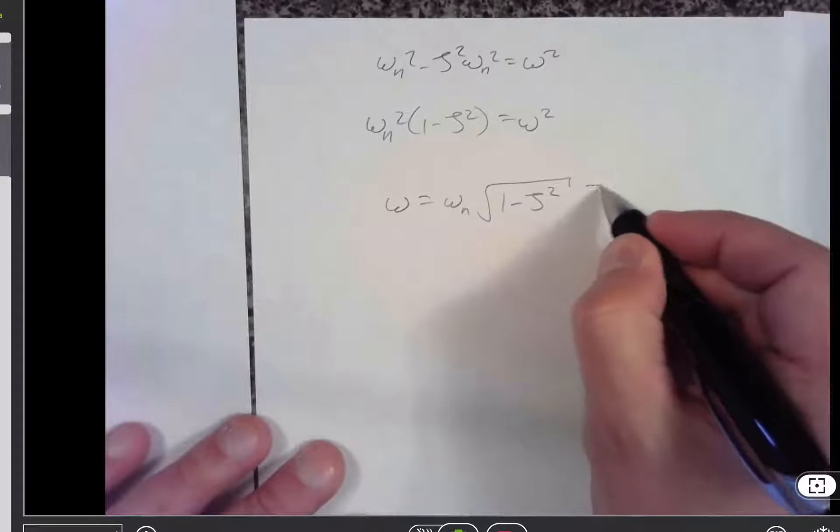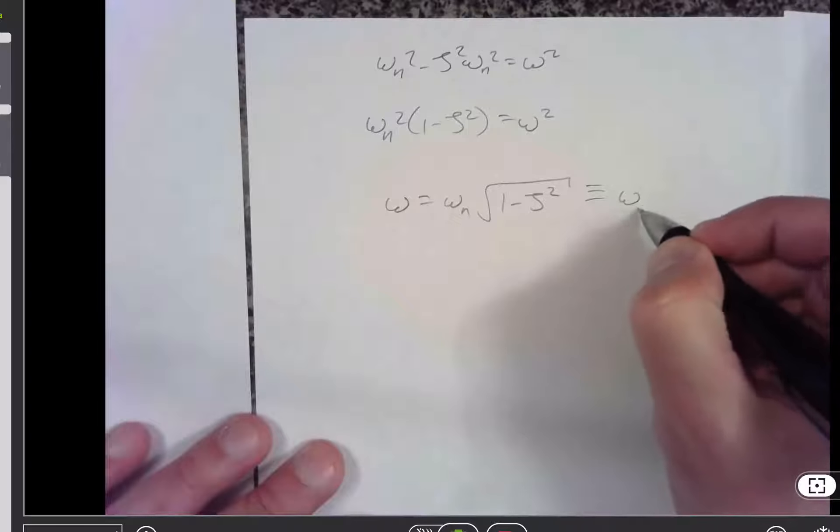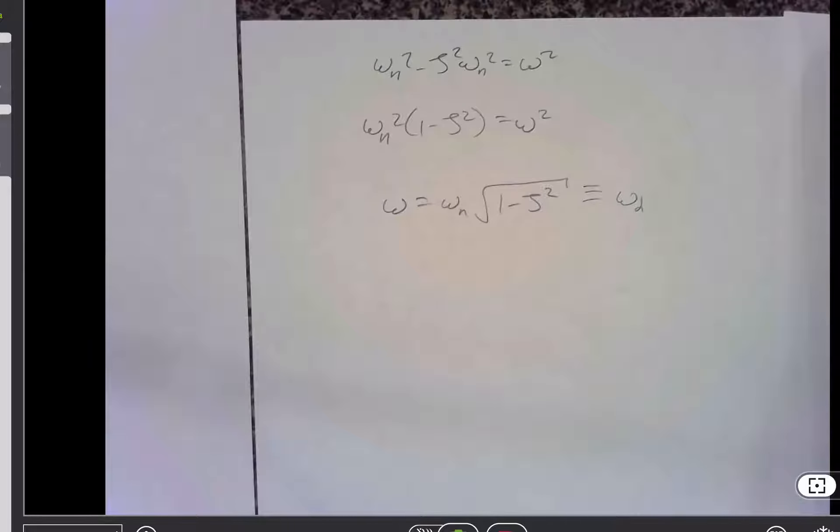And that comes up often enough that we give it a name, and we call it omega d, the damped natural frequency.